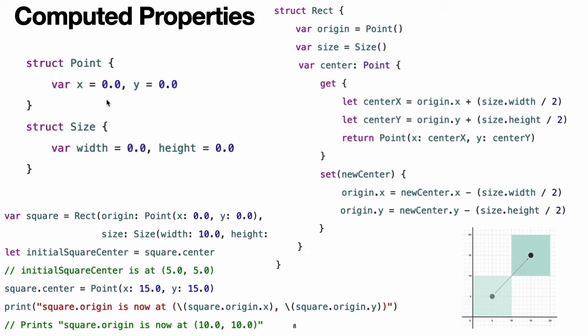Point encapsulates the x and y-coordinate of a point. Size encapsulates a width and a height. Rect defines a rectangle by an origin point and a size. The Rect structure also provides a computed property called center. The current center position of a Rect can always be determined from its origin and size, so you do not need to store the center point as an explicit point value. Instead, Rect defines a custom getter and setter for a computed variable called center.